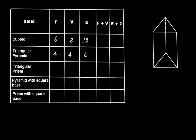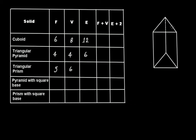Next is the triangular prism. It has a triangular base at the top and bottom. How many faces? It has two triangular faces — the top and the bottom — and one, two, three parallelograms as lateral surfaces. So three lateral surfaces and two triangular surfaces, making five faces total. Vertices: one, two, three, four, five, and six. Edges: one, two, three, four, five, six, seven, eight, and nine.